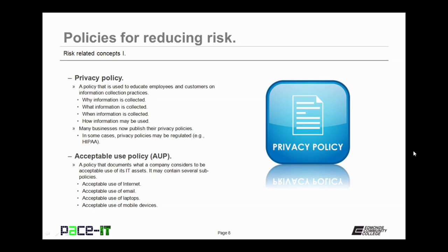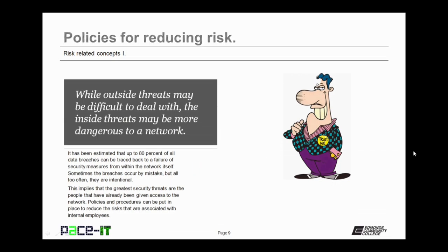While outside threats may be difficult to deal with, the inside threat may be more dangerous to a network. It has been estimated that up to 80% of all data breaches can be traced back to a failure of security measures from within the network itself. Sometimes the breaches occur by mistake, but all too often these breaches are intentional, implying that the greatest security threats are the people that already have been given access to the network.